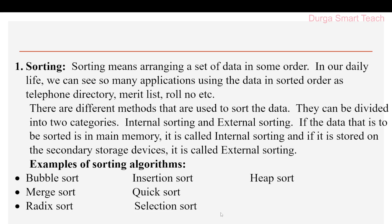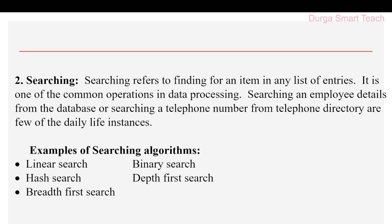The next problem type is searching. Searching is nothing but finding a number or an item in a list of entries. It is one of the most common operations in data processing. For example, searching for a particular employee's details from a database, or searching a telephone number from a telephone directory. Searching algorithms include linear search, hash search, breadth first search, binary search, and depth first search.